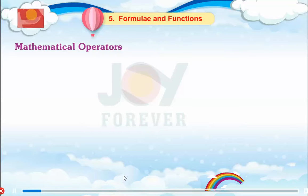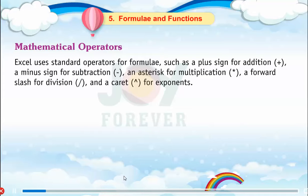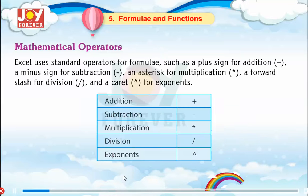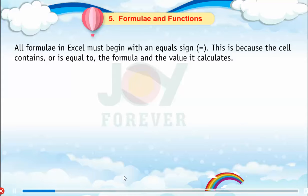Mathematical Operators. Excel uses standard operators for formulae, such as a plus sign for addition, a minus sign for subtraction, an asterisk for multiplication, a forward slash for division, and a caret for exponents. All formulae in Excel must begin with an equal sign, because the cell contains or is equal to the formula and the value it calculates.